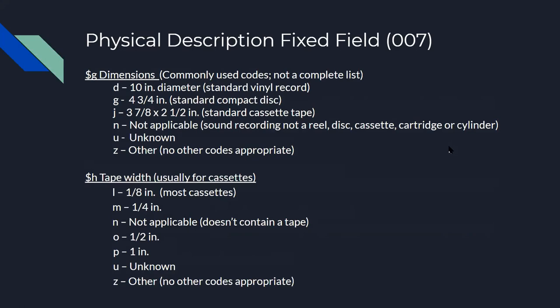Subfield G codes the dimensions of the items. We have 10-inch diameter, which is standard for vinyl or phonograph records. Four and three-quarter inches is standard for a compact disc, and then we have standards for cassette tape and the not-applicable, unknown, and other options. Subfield H records the width of the tape. The most common is one-eighth inch for most cassettes. There is also a quarter inch, and not-applicable for sound recordings that don't have a tape, like compact discs and phonograph records.